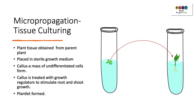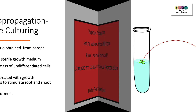The final method is micropropagation of plants, otherwise known as tissue culturing. A small sample of plant tissue is obtained from a parent plant and placed in a sterile growth medium with nutrients and other chemicals. Eventually, a callus — a mass of undifferentiated cells — will form, and this callus is then treated with growth regulators that stimulate roots and shoots to grow, and eventually a plantlet is formed.